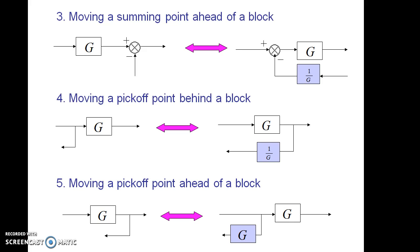The fourth rule is moving a pick-off point behind a block. In this case, as previously mentioned, the same thing will happen, so we have to include the gain block 1 by G on the feedback path from which the take-off point is included.